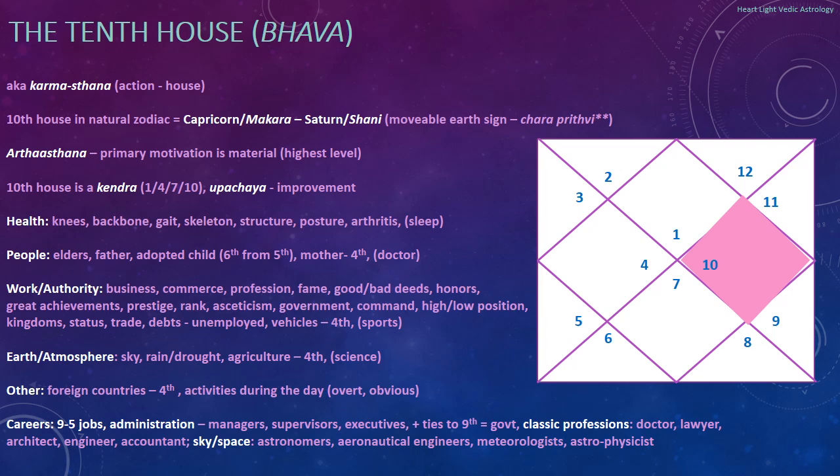You can also see honors and great achievements here — people who get awards, who get positive notoriety, who are seen in a positive way, like 'best hair salon in town' type recognition. Prestige and rank can also be seen here. Also asceticism — for example, when I see Ketu in the 10th house, it might be somebody who has walked away from the 9-to-5 life. If the 10th house is afflicted, you might see the opposite: people who just don't want to follow the tried-and-true, work-up-the-ladder lifestyle.